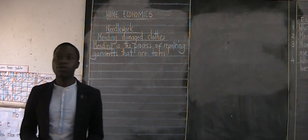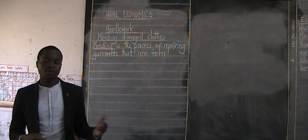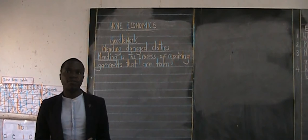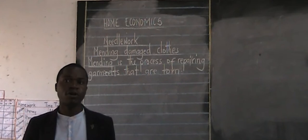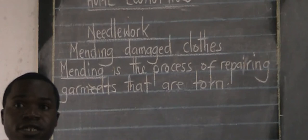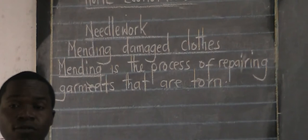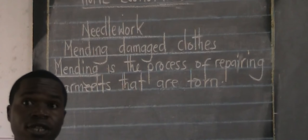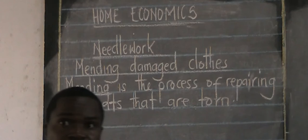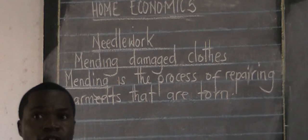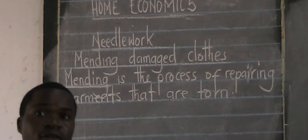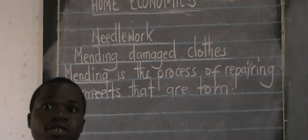We do this to prevent the torn area from becoming much worse. That's why I said before you wash your clothes, the first thing you need to do is mend them, then wash them. We do that to prevent the clothes or material from becoming worse — to prevent that area which is torn from becoming worse.